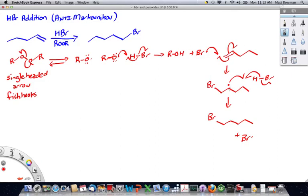That generates another carbon radical, which reacts with another HBr to generate a new bromine radical. All these steps, of course, are reversible.